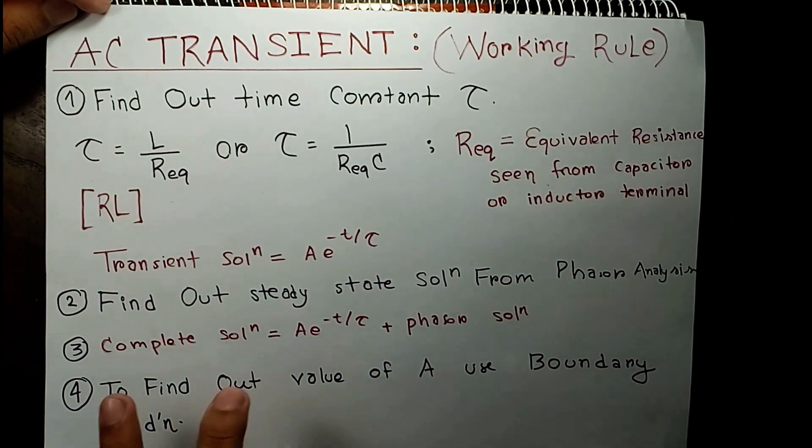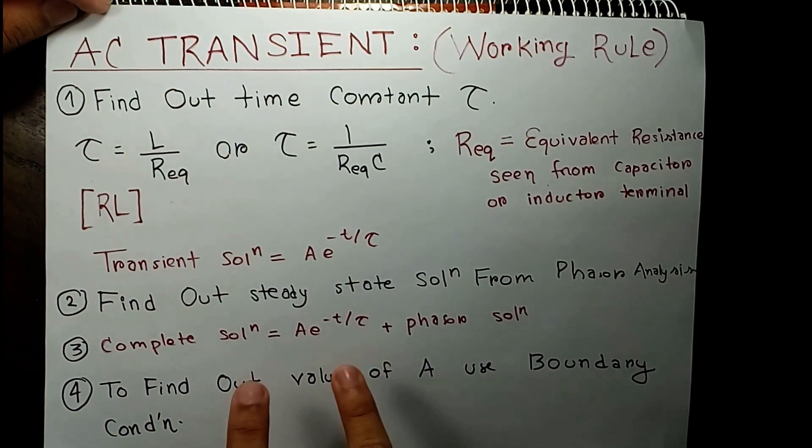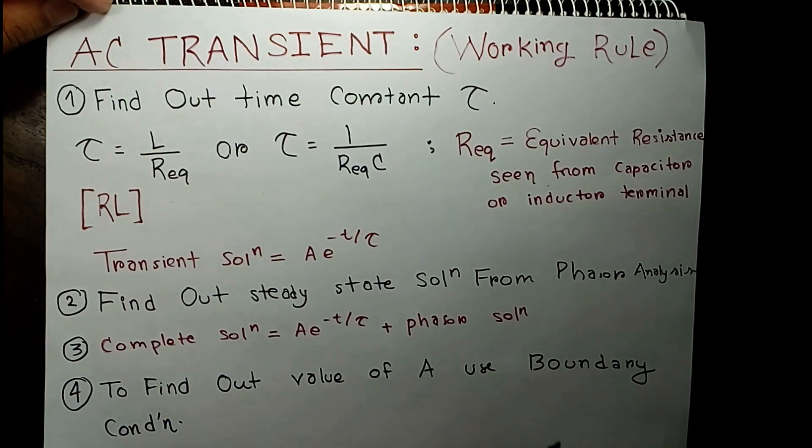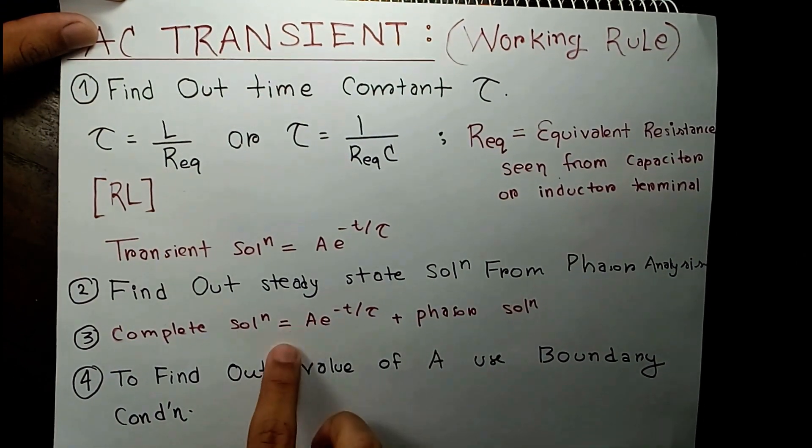The complete solution will be your transient solution—that is A times e^(-t/tau)—plus the phasor solution. You can see that an arbitrary constant A is here. To find out the value of A, we need to use boundary conditions.